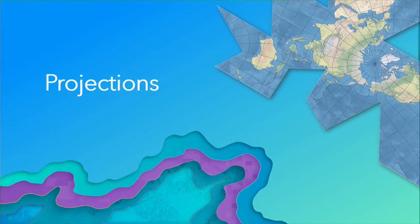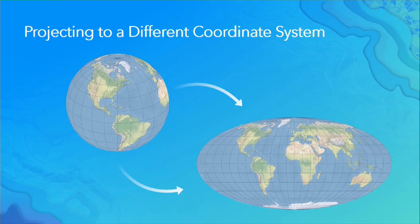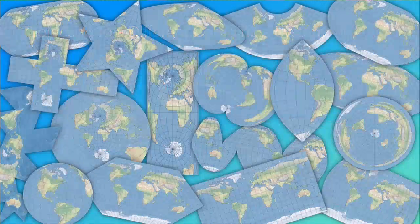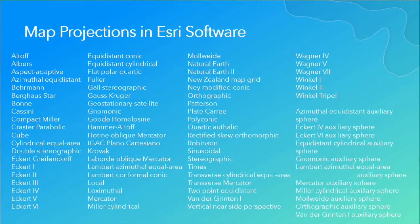A projection is an algorithm that converts between a globe — degrees, latitude, longitude — to a flat map, XY. We're going from a round globe to a flat map. There are about 70 to 80 different projections that we support, and we're adding more all the time.